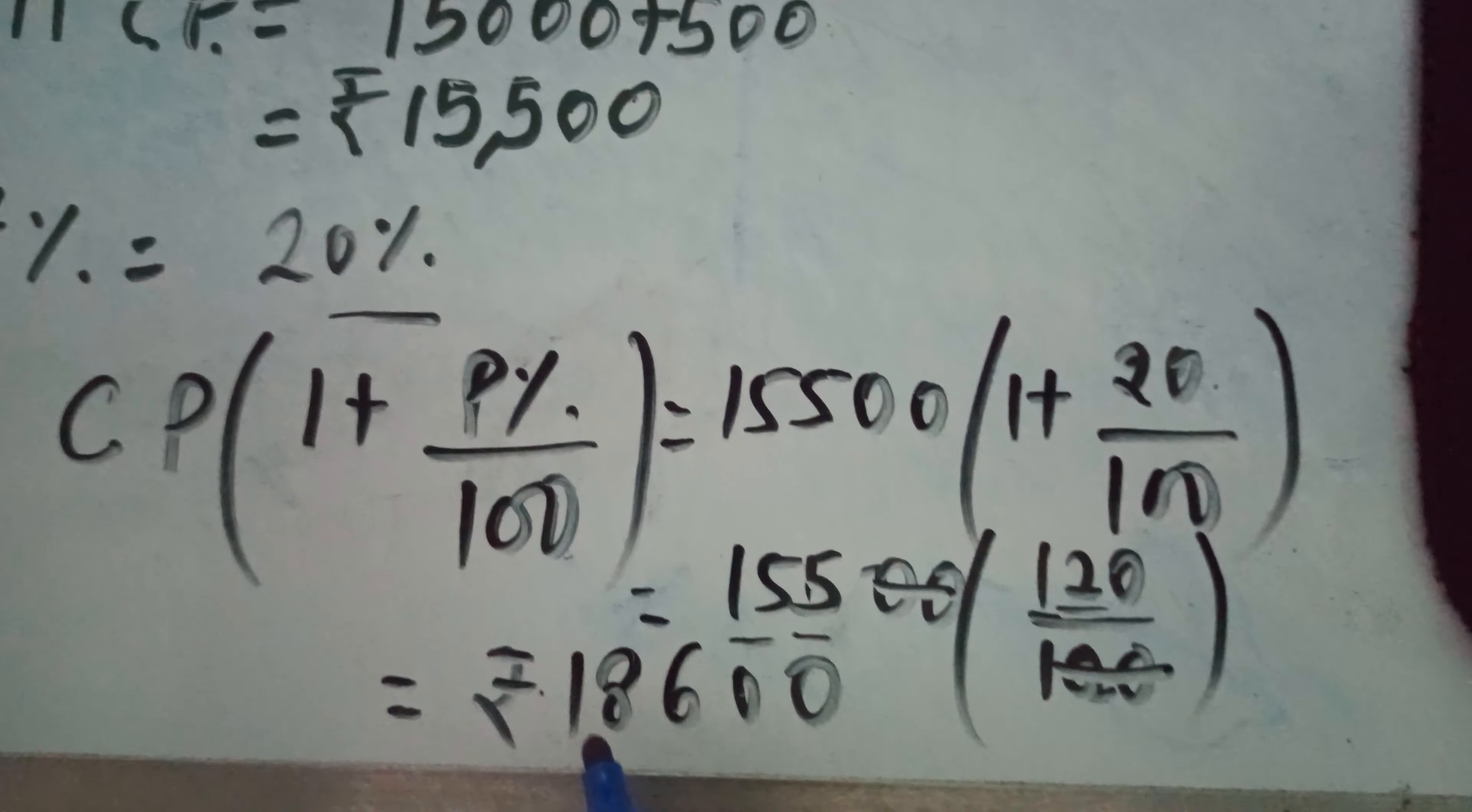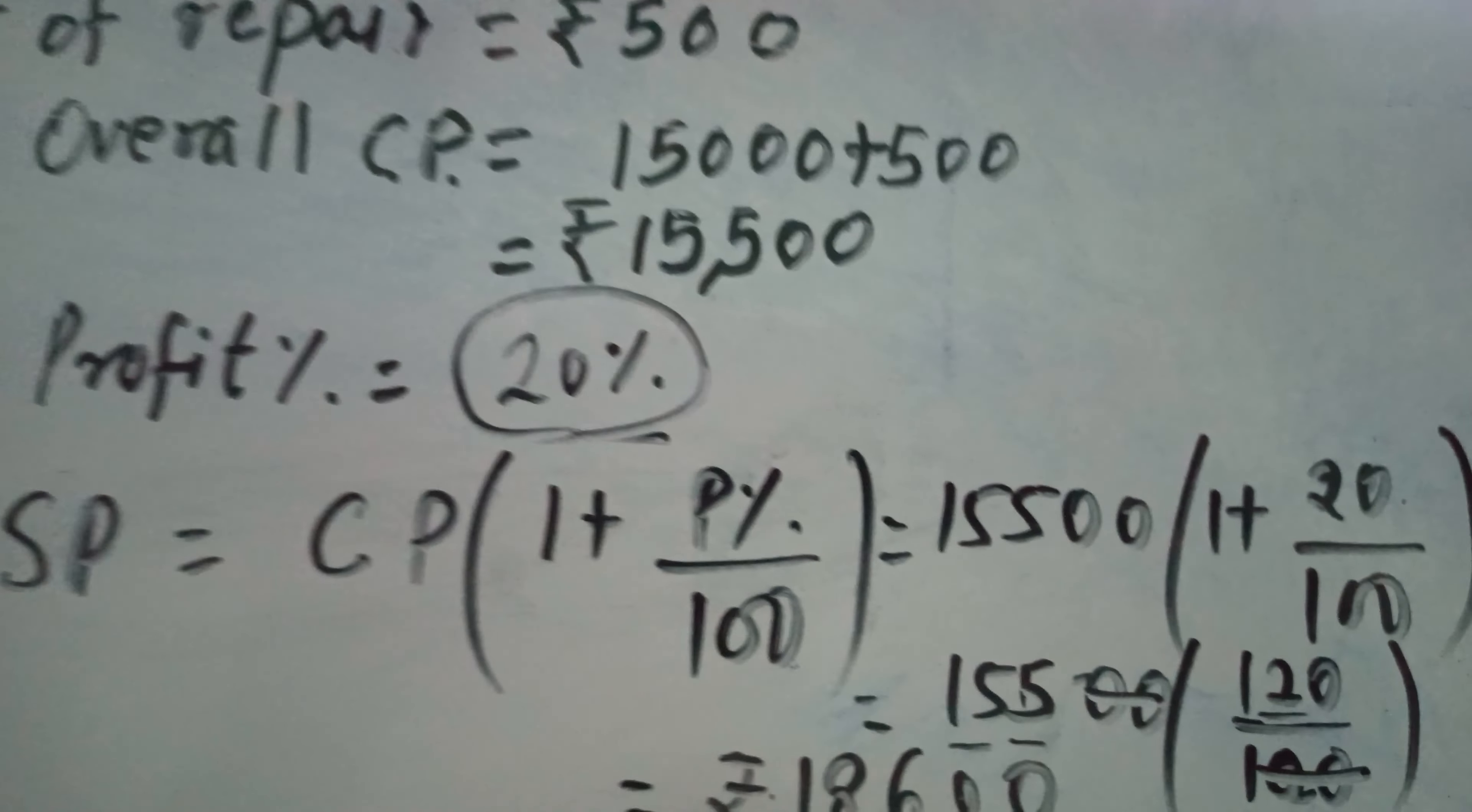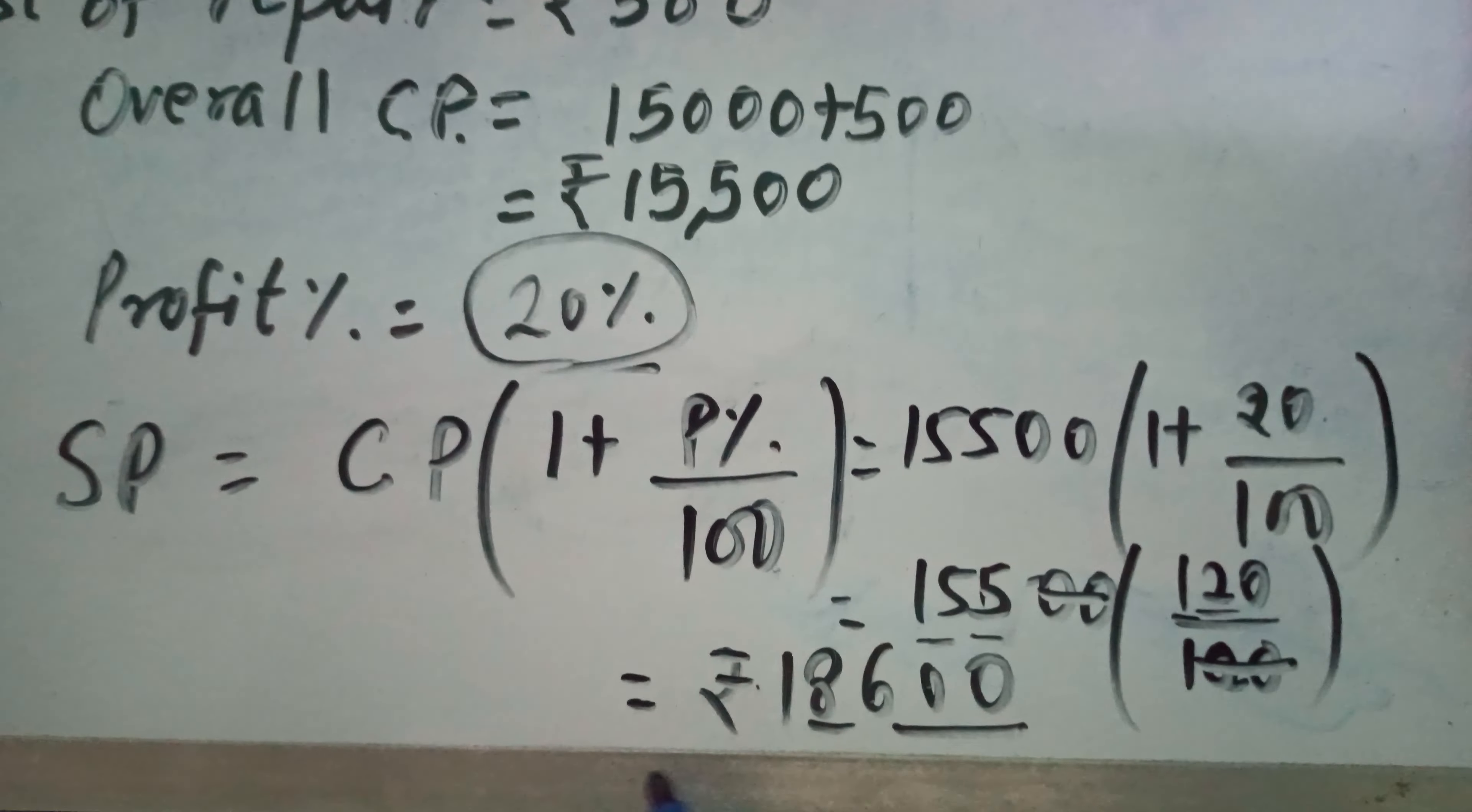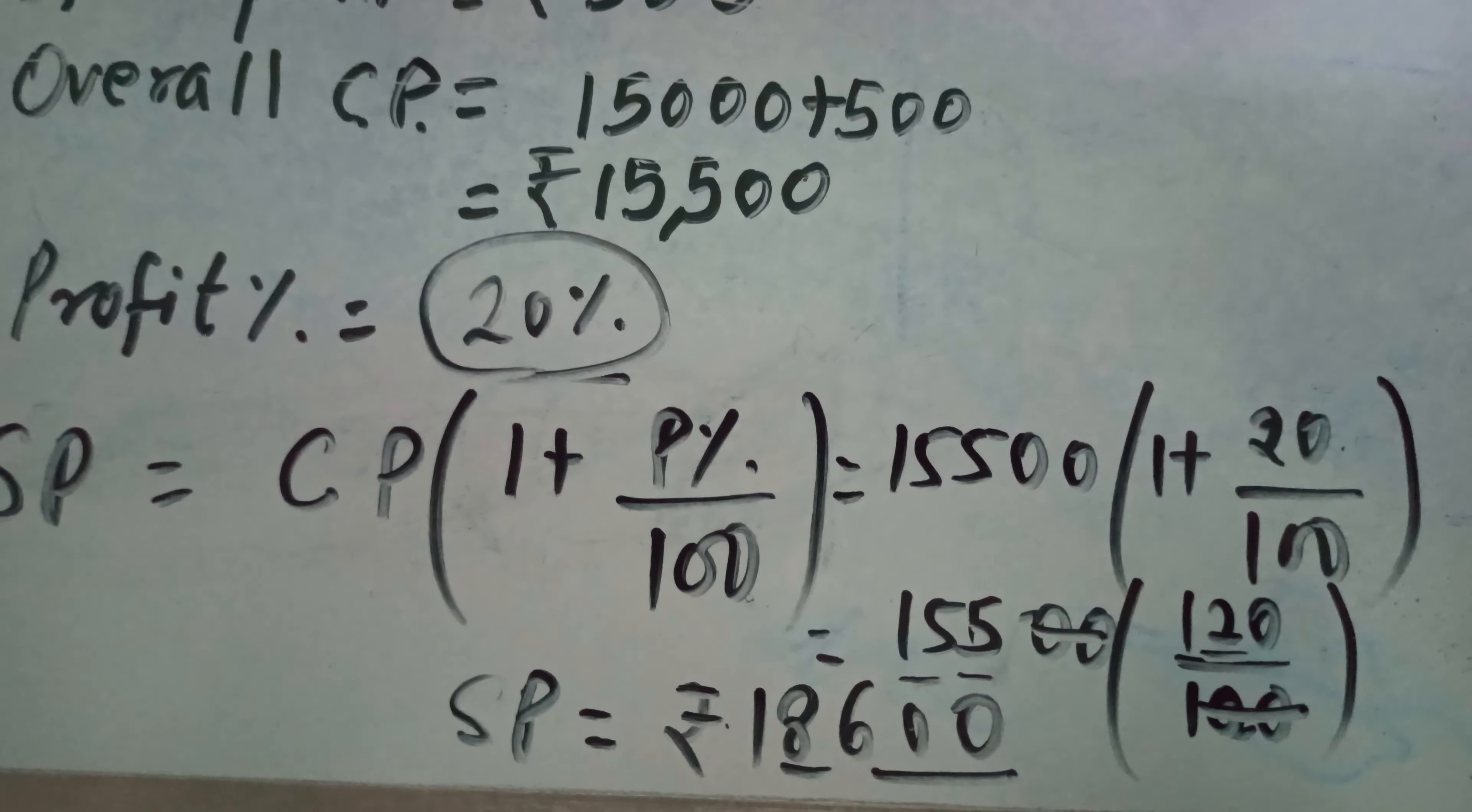That means if we sell the article at ₹18,600, then we will get 20% profit. Okay, fine, so this is our SP, selling price. Thank you for watching, bye bye.